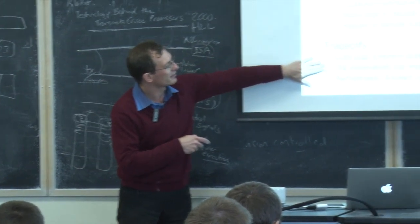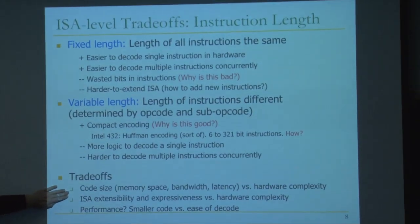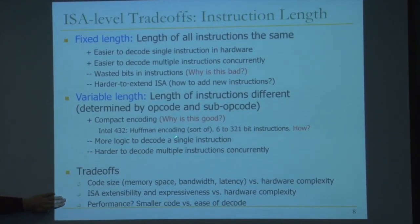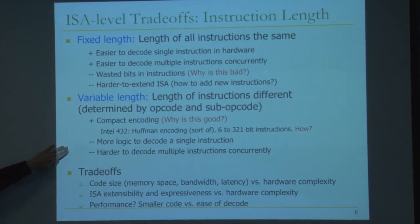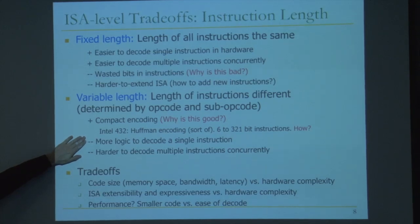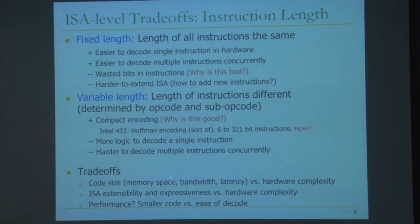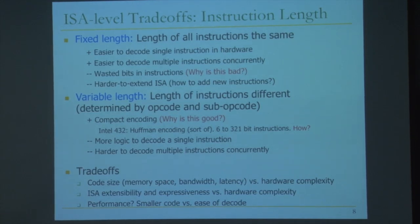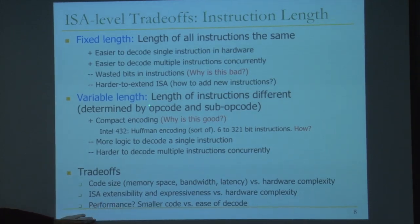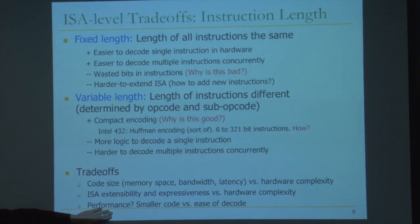The trade-offs associated with instruction length: code size, memory space, bandwidth, and latency versus hardware complexity. With variable length, code size is nice but hardware complexity is higher. ISA extensibility and expressiveness — variable length is easier to extend, you can add many instructions, but again hardware complexity is higher. Performance is interesting: you have smaller code with variable length, giving benefits in memory space, bandwidth, and latency. But ease of decode improves performance for fixed length. It turns out if you design your decoder well, variable length should give higher performance in general, because decoders should not be on the critical path and memory is a lot more important in terms of performance.